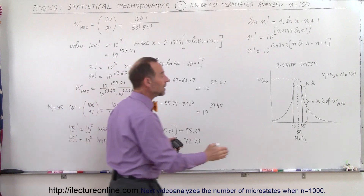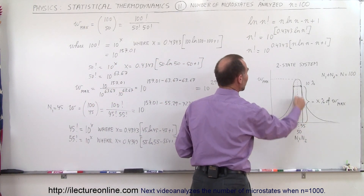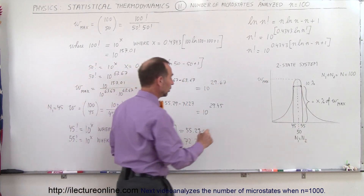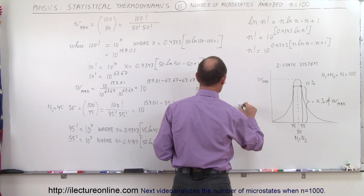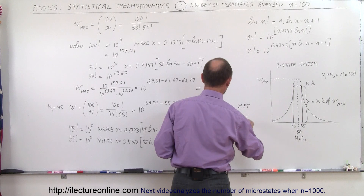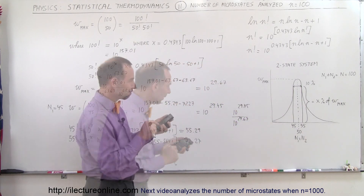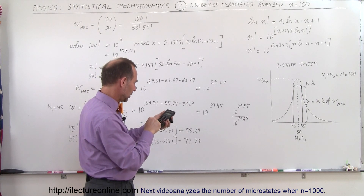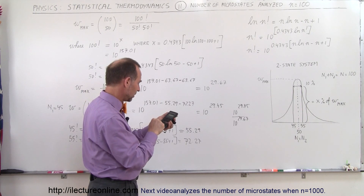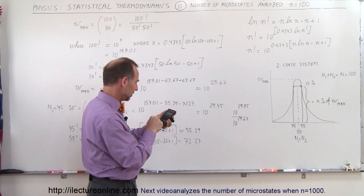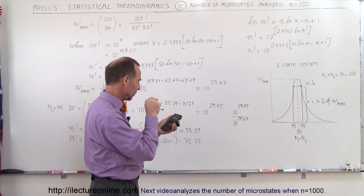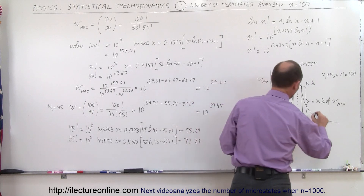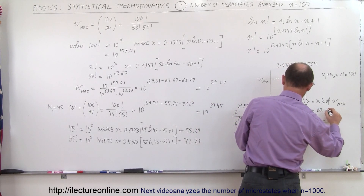What is the ratio of microstates at 10% off the maximum to the maximum number of microstates? We have 10 to the 29.45 divided by 10 to the 29.67, which is 10 raised to 29.45 minus 29.67, giving us a ratio of 0.602, or in other words, 60.2%.